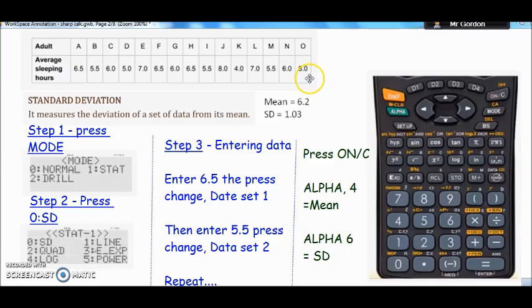At this point you need to press ON/C when you've finished and then you're looking for the mean first. The mean lives above the number 4, you can see a little green X bar hopefully here and that's representing the mean. So you press ALPHA to access the green functions, so ALPHA 4 will get you the mean and that should be 6.2. And then ALPHA 6 will give you the standard deviation because you've got a little sigma above the 6 in green, so press ALPHA 6 and that should come out at 1.03. If you don't get those two values, one of two things might be happening.